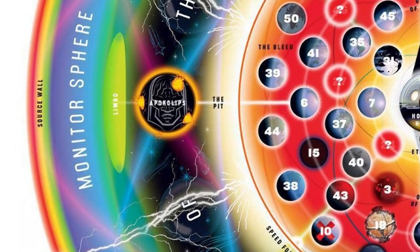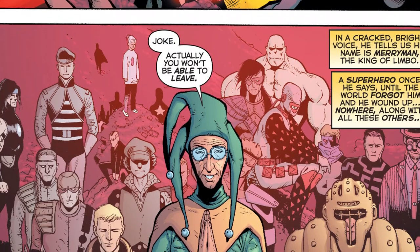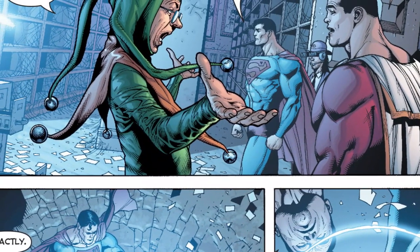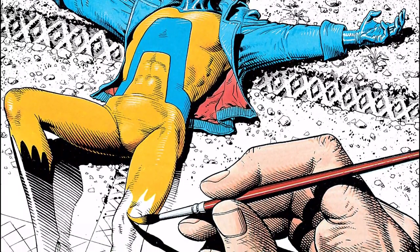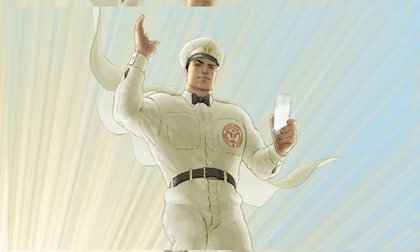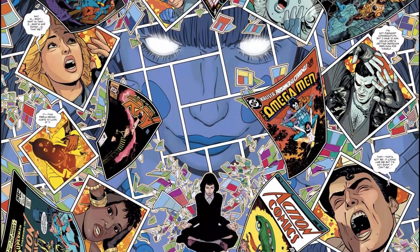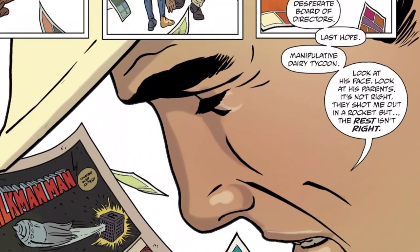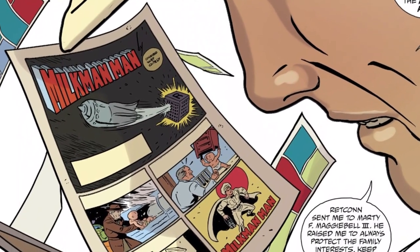At the outermost reaches of the Sphere of Gods lies the mysterious realm known as Limbo. Within this ethereal expanse, obscure and forgotten comic book characters who have temporarily faded from print find solace, patiently awaiting their return to the spotlight. What sets Limbo apart is the profound self-awareness of its inhabitants — they understand their fictional existence and yearn to once again grace the pages of comic books. Curiously, when these characters are eventually written back into their comics, their awareness of Limbo and their fictional nature mysteriously fades away.